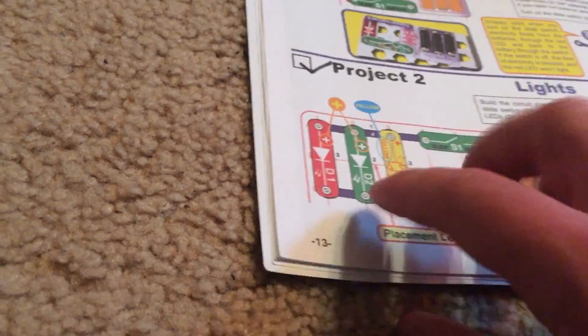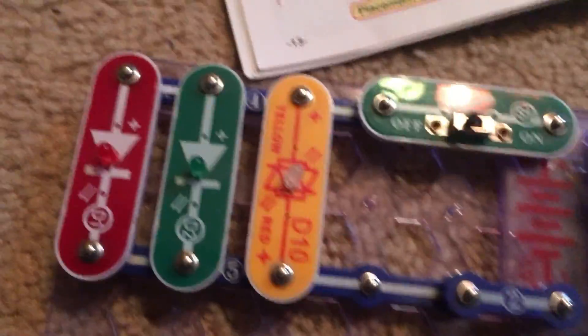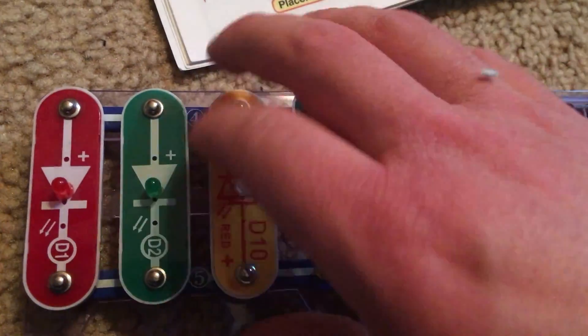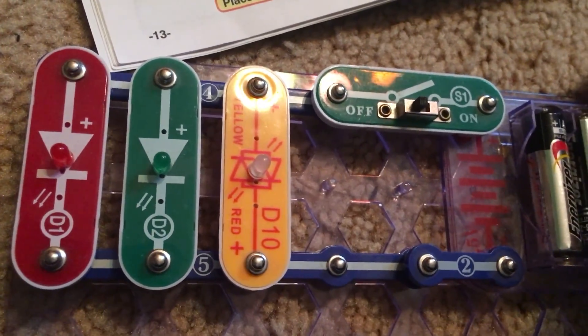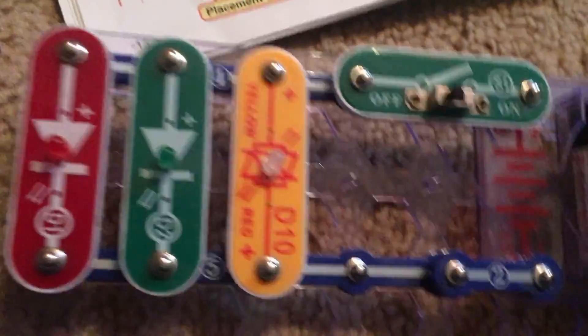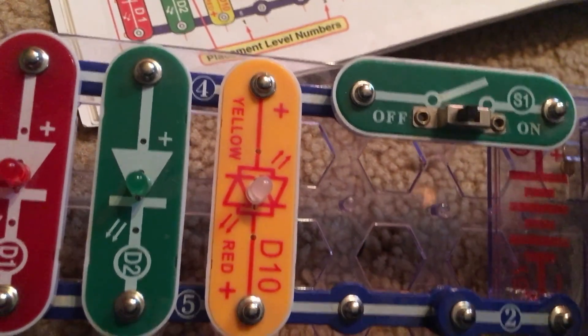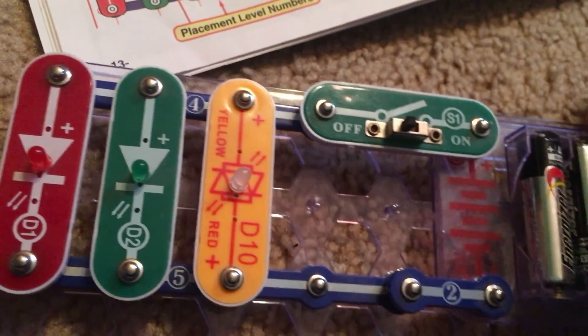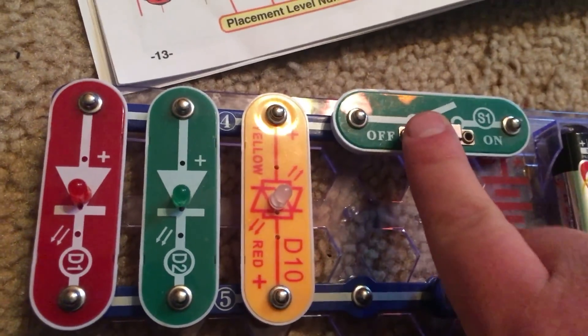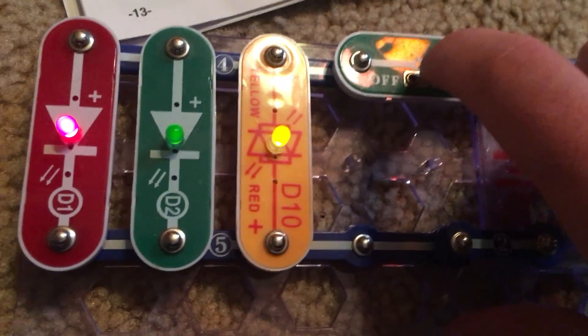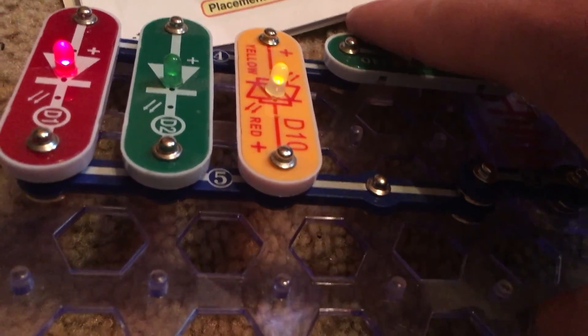Now, here is project 2. Project 2 is called Lights. This one uses all three LEDs that come with this set: the D1, D2, and D10 LEDs. You may notice that the D10 LED is labeled yellow and red. Well, you're going to find out real soon in this project and the next one. But without further ado, I'm going to turn on the slide switch. All three LEDs light up and you can see that they are red, green, and yellow, respectively.